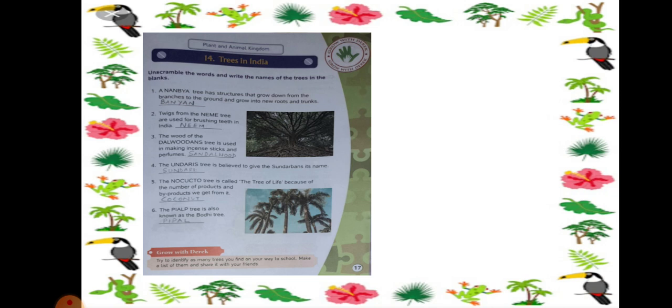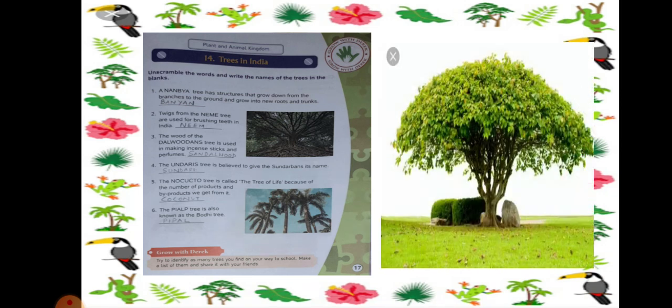Number 5. The tree is called the tree of life because of the number of products and by-products we get from it. So that is coconut because we get lots of products from this tree. This is a coconut tree. You can already see the picture of a coconut tree there.